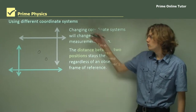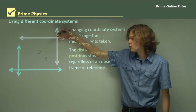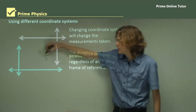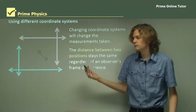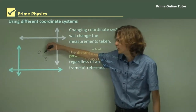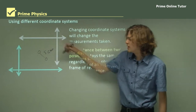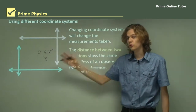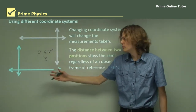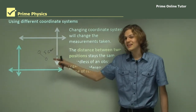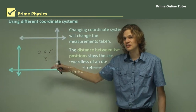So if you're in the pink coordinate system, the distance between these two objects might be five centimeters, and if you're in the blue coordinate system, it'll be the exact same distance.